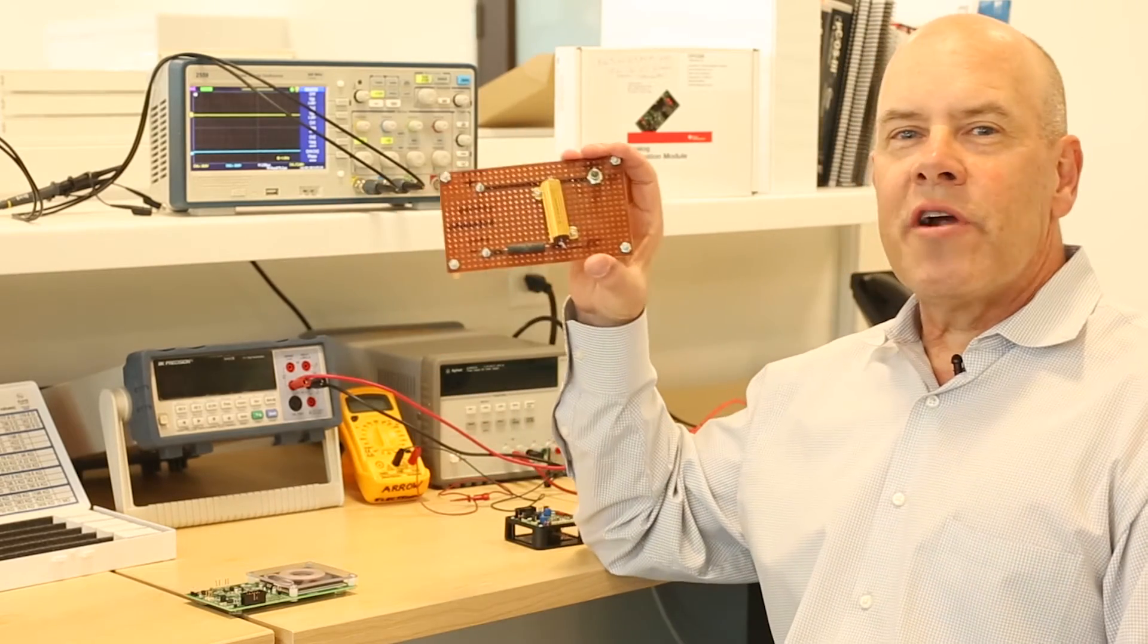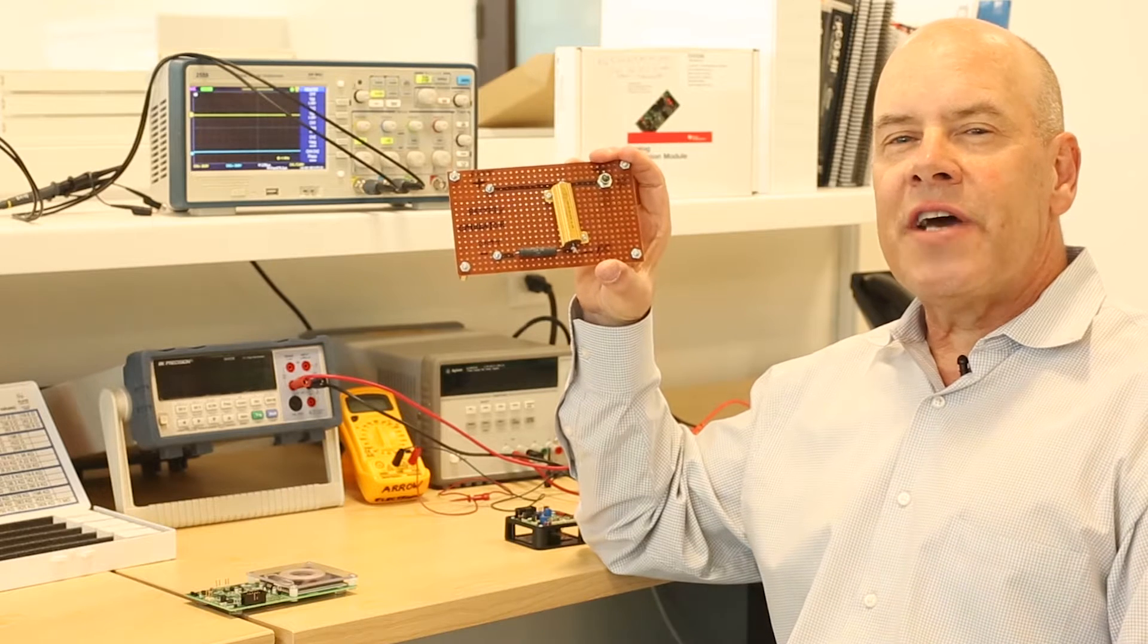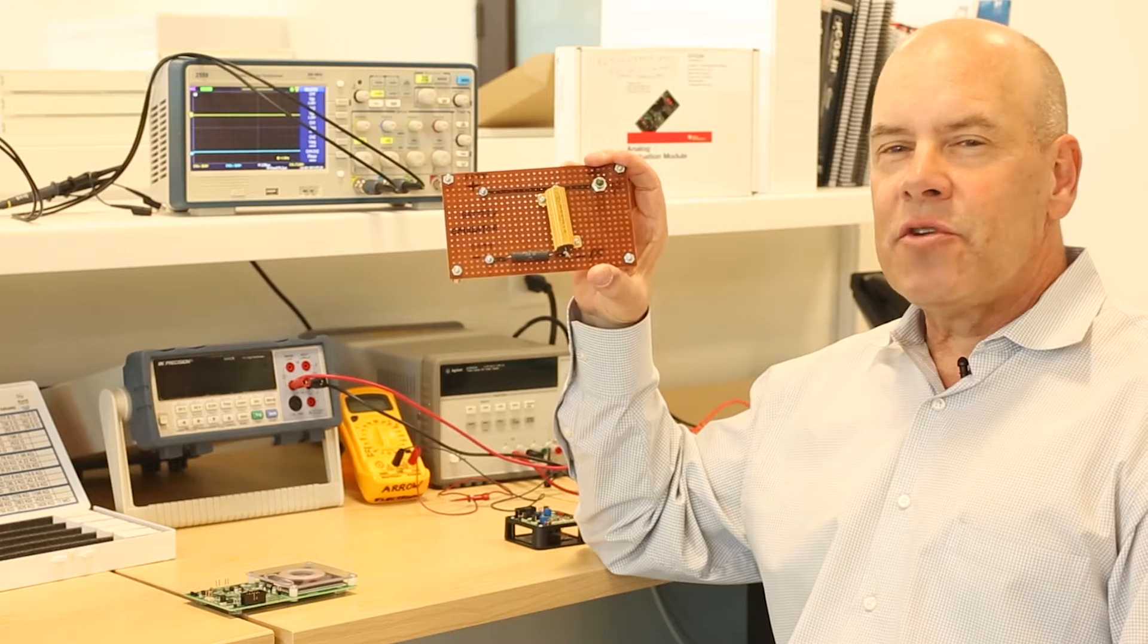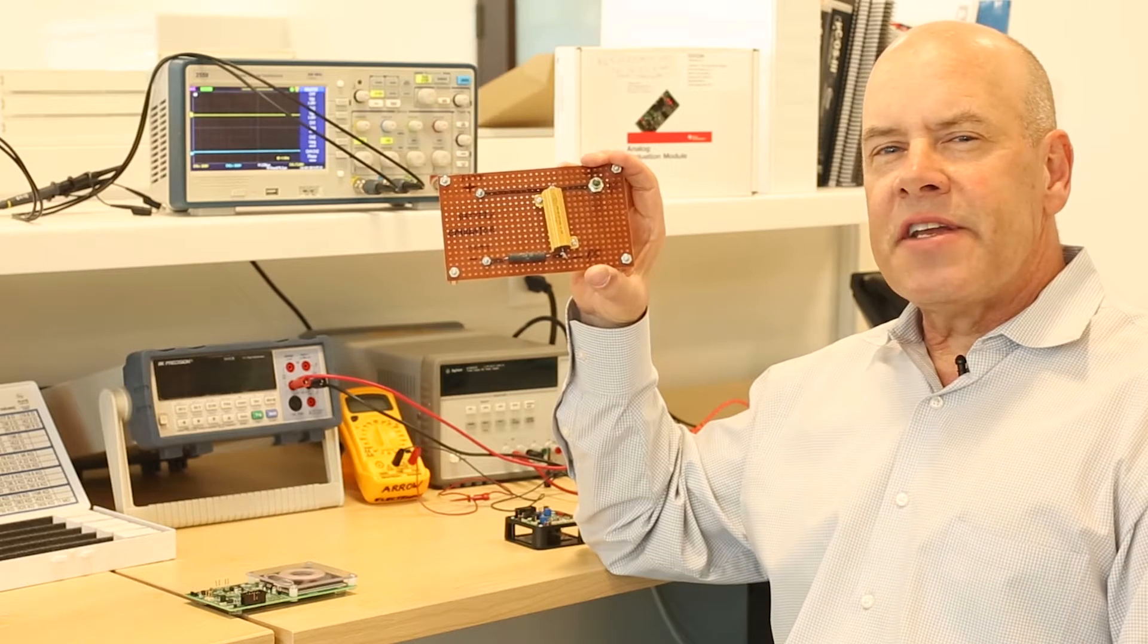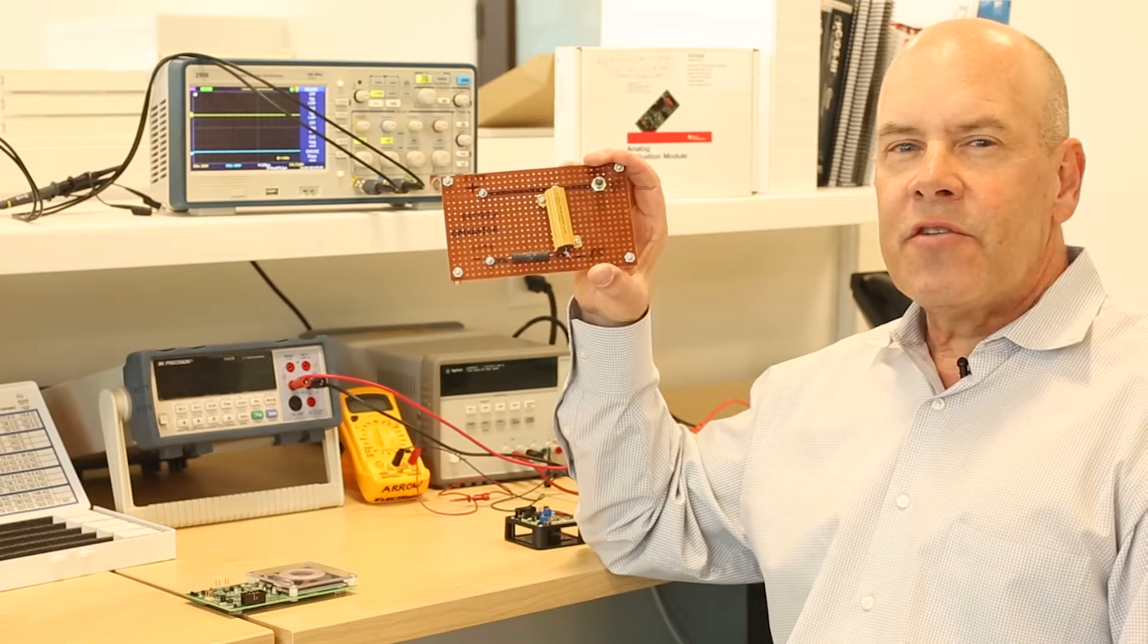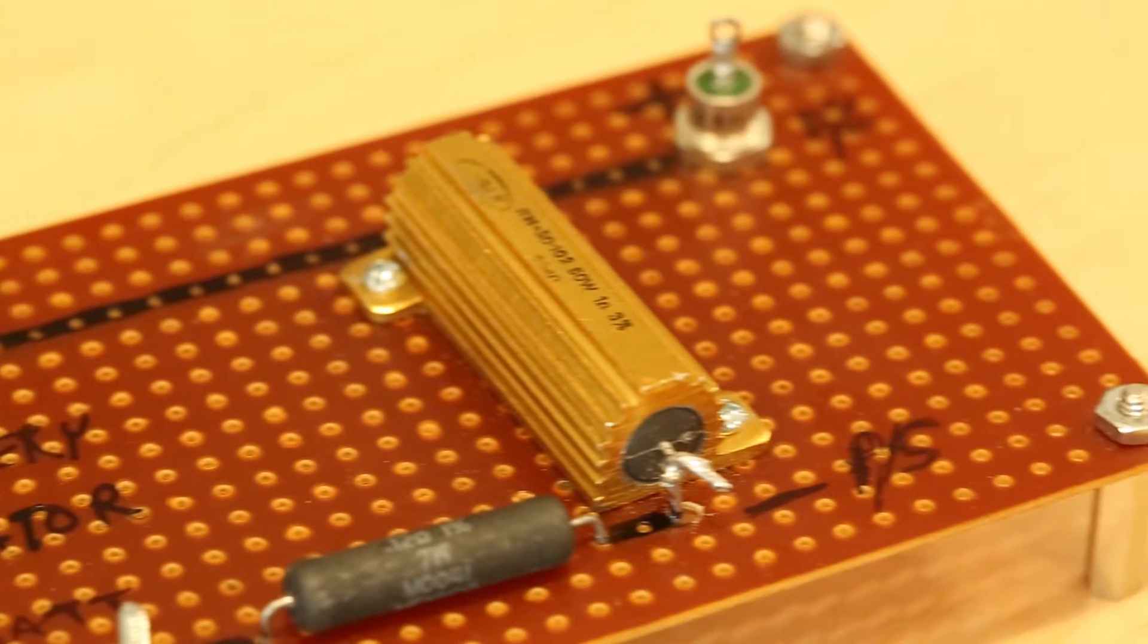For this demonstration, we are going to need one additional circuit, a battery emulator. This is called out in the user guide for the BQ51050B receiver and is simple to build. Rather than connect up an actual lithium ion battery and wait for it to charge, for testing purposes we can speed up the process using this circuit. Let's get started.